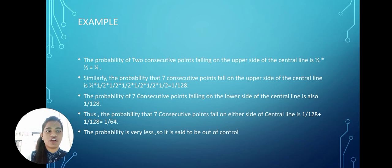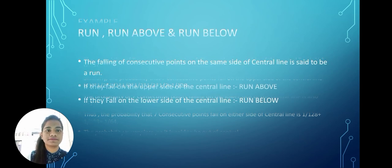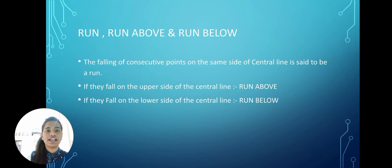Thus, the probability that 7 consecutive points fall on either side of the center line is 1/128 + 1/128, which equals 1/64. Here you can see that this probability is very, very less, and so the process is said to be out of control. This is the example of the Theory of Runs.